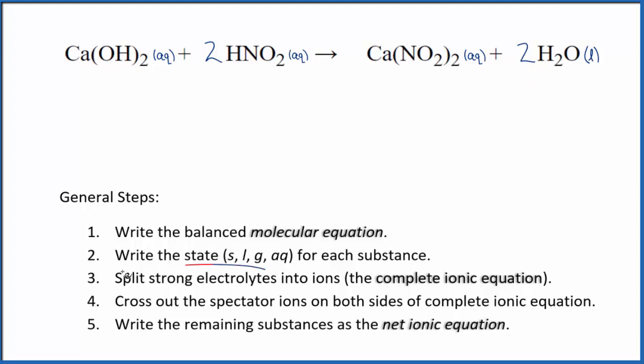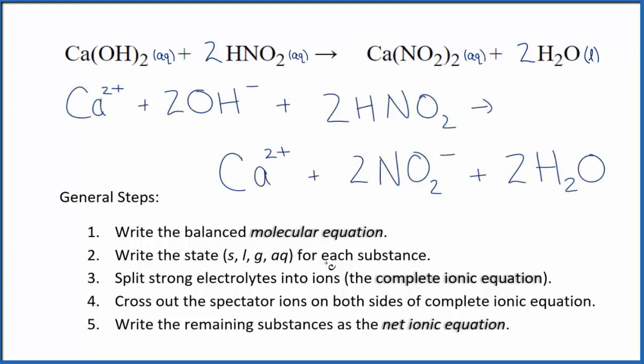So now we're going to split the strong electrolytes into their ions for the complete ionic equation. Remember we said that HNO2, this nitrous acid, it's a weak acid. We're not going to split it apart. And the liquid water, we won't split that apart either. When we do this, we end up with, so this is the complete ionic equation.